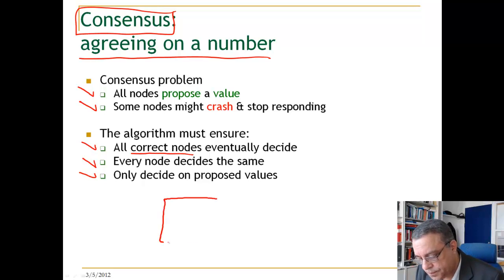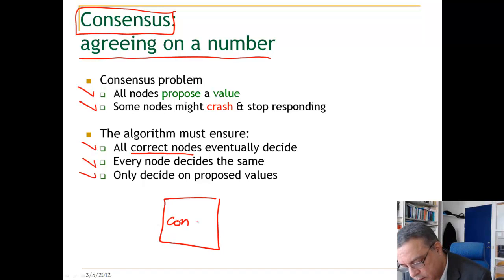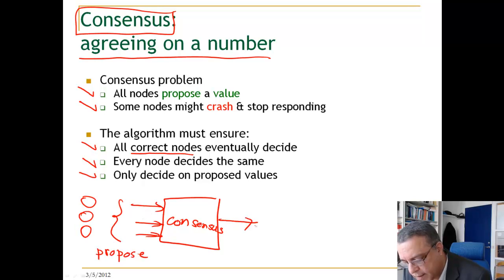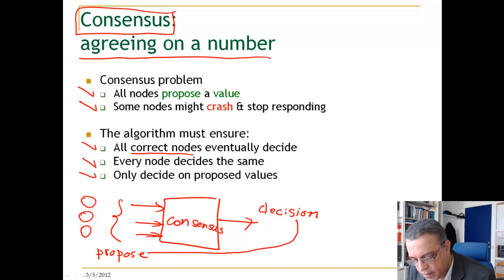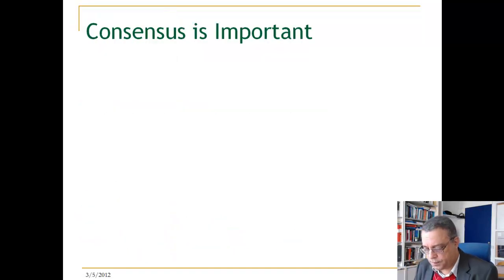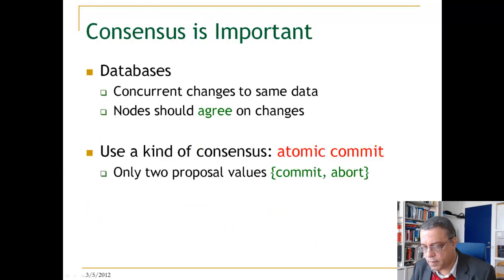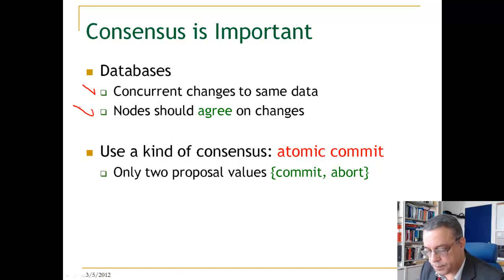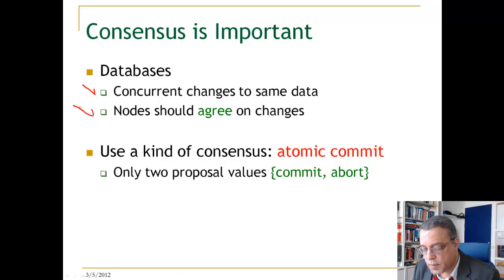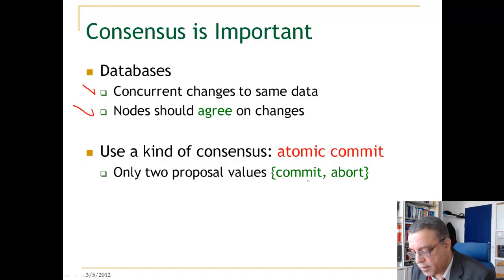Here is consensus: we have nodes that propose values, and we get a decision. This decision should be a single value, and every node should be informed of it. Consensus is an important problem. In databases, where you have multiple concurrent transactions with concurrent changes to the same data, nodes should agree on the changes. For this, a special kind of consensus is used called atomic commit, where the nodes involved in a concurrent transaction only propose two possible values: commit and abort.